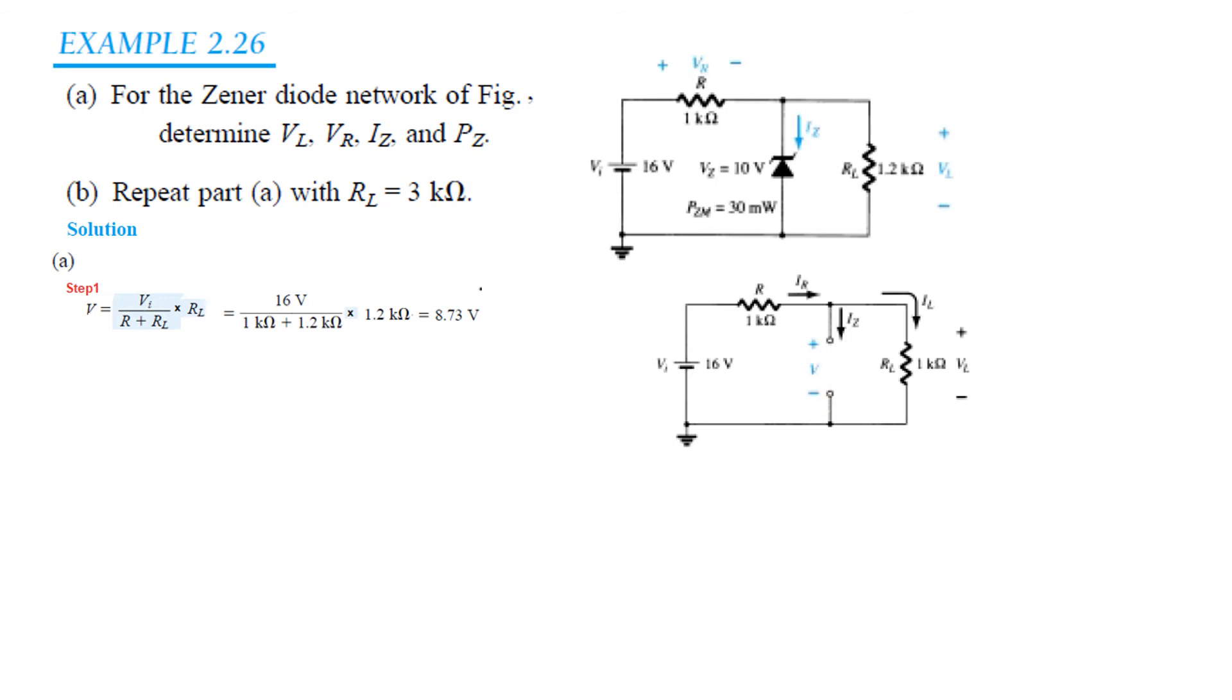Calculate V. So calculating V by putting in the same formula, V is 8.73 volt. Now how much is our diode rated? It is rated at 10 volt.